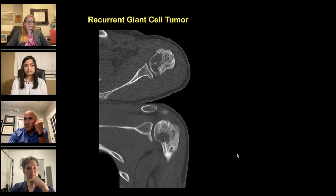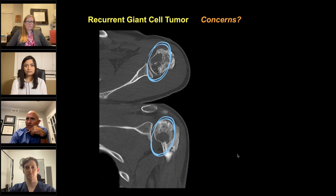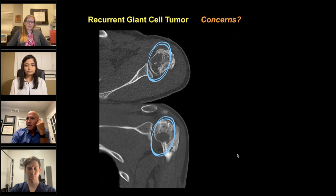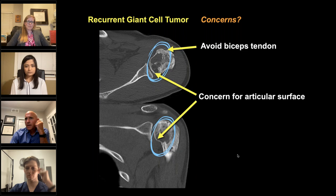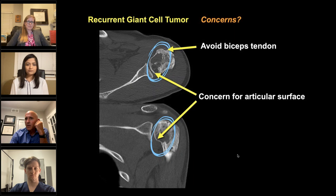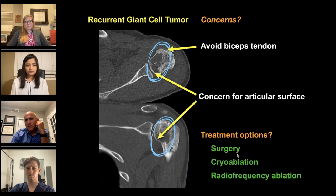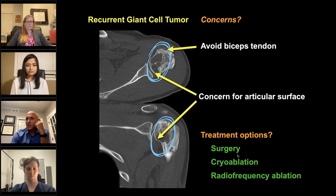Next: recurrent giant cell tumor. We're often managing patients with recurrent disease after surgery or other interventions. In this case, recurrent giant cell in the proximal humerus. When thinking about treatment options, you have to worry about the biceps tendon — you need to know your anatomy to avoid injury. You also have to respect the articular surface; it doesn't help to treat the tumor and then cause degenerative arthritis by injuring the cartilage. Surgery was not a great option here because there was very little bone to work with. For treatment, cryoablation would require ablating the residual thin bit of bone to get a margin, causing trouble — so we chose radiofrequency ablation.